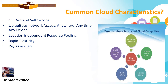Common cloud characteristics: the first is on-demand self-service. Flexible pricing per pay-as-you-use. Rapid elasticity. Resource pooling. Ubiquitous network access. Ubiquitous network access means anywhere, anytime, any device. Location independence. Resource pooling. Rapid elasticity. Pay as you use. These are all characteristics of common cloud computing.